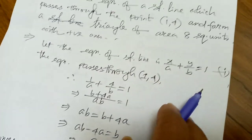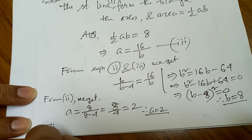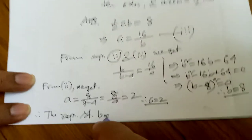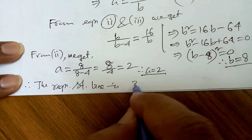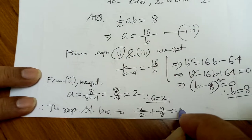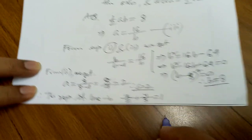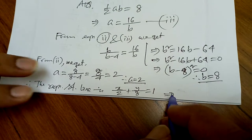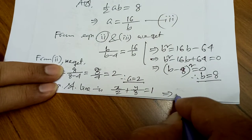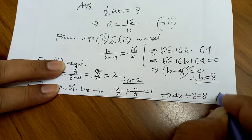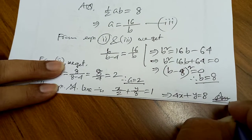So putting a = 2 and b = 8 into the original equation x/a + y/b = 1, the required equation is x/2 + y/8 = 1. Taking lcm of 2 and 8 which is 8, after calculation you get 4x + y = 8. This is our required equation.